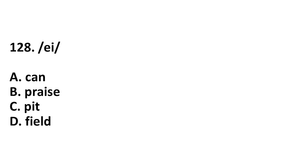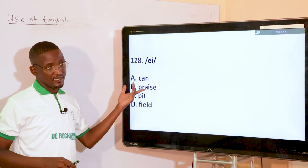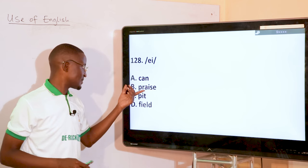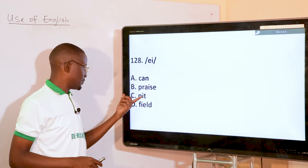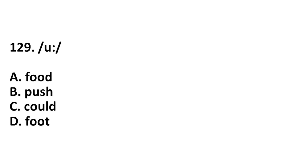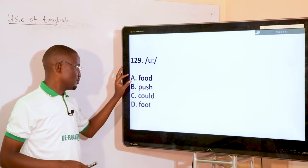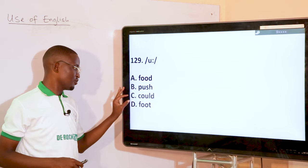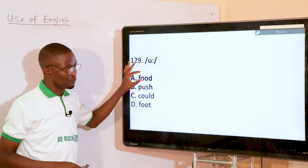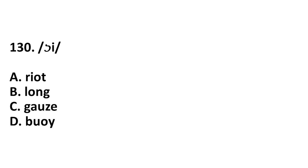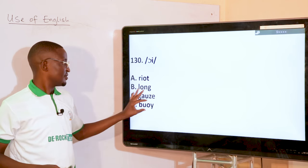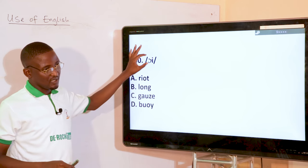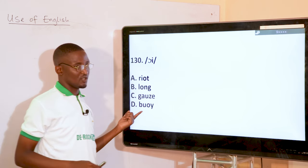For the sound /eɪ/, praise is the answer — not can, pit, or field. For the long /uː/ sound, that is food — the other options (push, could) are short vowels. For the /ɔɪ/ sound, that is boy. The phonetic symbol represents the sound to be realized in the chosen word.